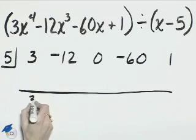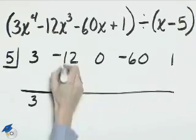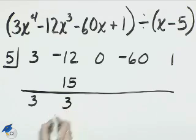We'll bring 3 straight down. 5 times 3, 15, goes here, and we combine these two. That's the value 3.